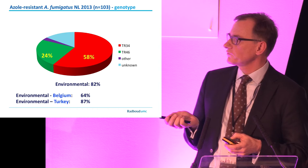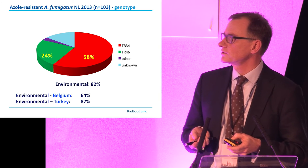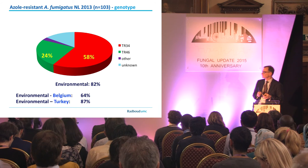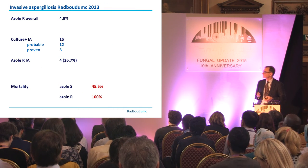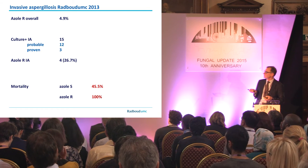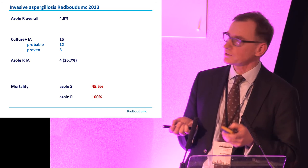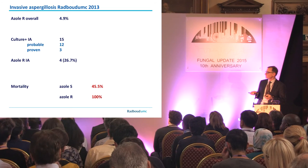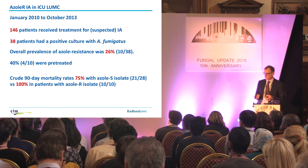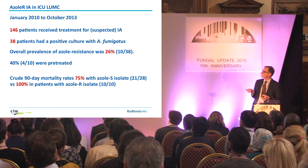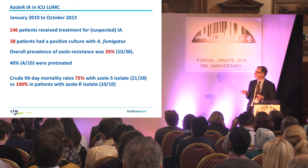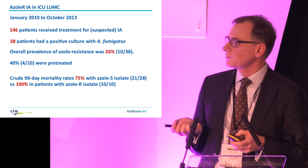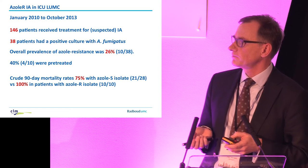In the Netherlands, the environmental route accounts for approximately 80% of azole-resistant disease; in Belgium and Turkey it is also a high proportion. In our center with 4.9% resistance last year, 15 patients were culture-positive with invasive aspergillosis; four had azole-resistant isolates (26%), and all four died compared to 45.5% mortality with susceptible isolates. In the Leiden University ICU over three years with 146 patients, 38 were culture-positive for Aspergillus fumigatus; 10 of 38 (26%) were azole-resistant, and all of them died — though the fatality rate in susceptible patients was also very high.